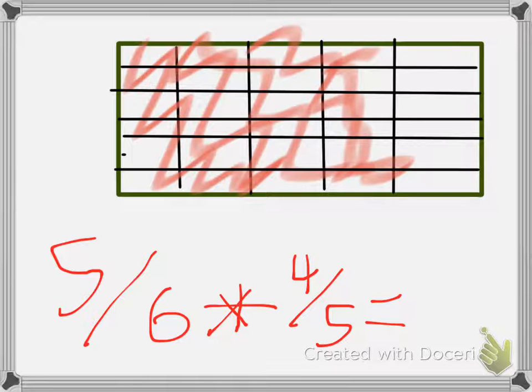Let me just change the color to show the difference. Now, for 5 sixths, I have to color... So, I have 4 fifths down, and now I need to get 5 sixths of that. That's 1, 2, 3, 4, and 5 sixths.